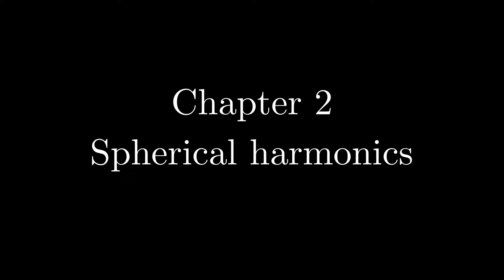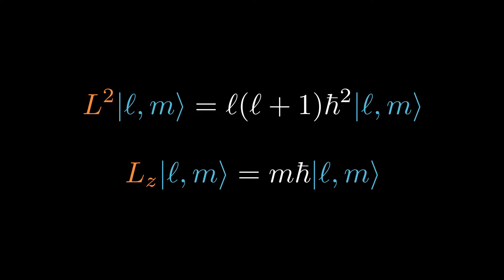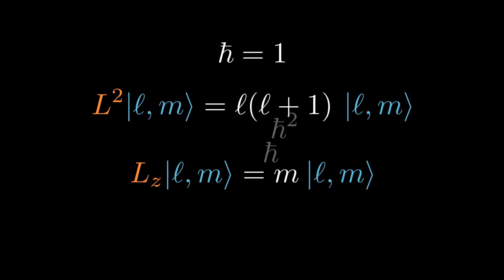We now begin our discussion of angular dependence of the atomic orbital. To see what these mutual eigenstates of L^2 and L_z look like in physical space, we wish to obtain the position representation of these states. From now on, we set ℏ to 1 to simplify the algebra.